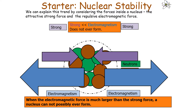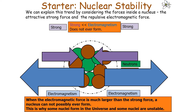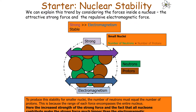If electromagnetism were greater than the strong force, the nucleus would never even form. For small nuclei, when neutrons equal protons, the strong force is much larger than the electromagnetic force because both neutrons and protons experience the strong interaction, and it simply exceeds the electromagnetic interaction. So when equal in number, the strong force dominates and the nucleus is stable.